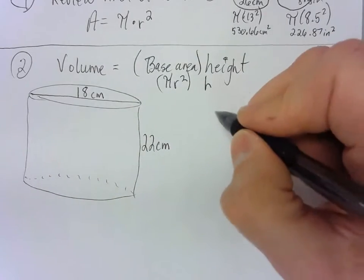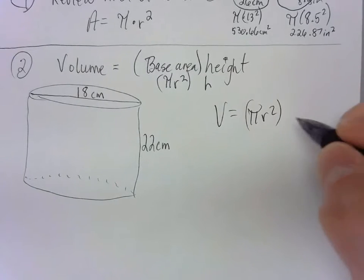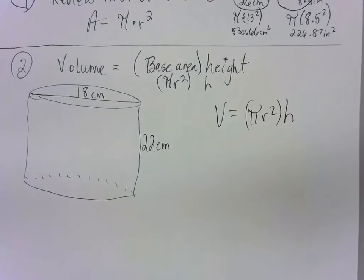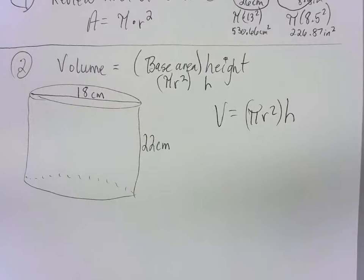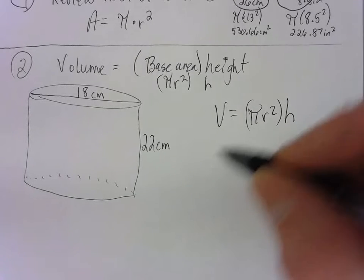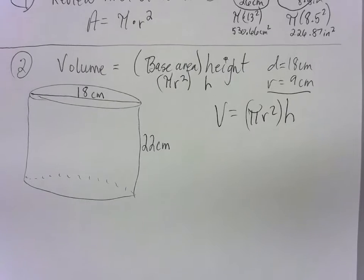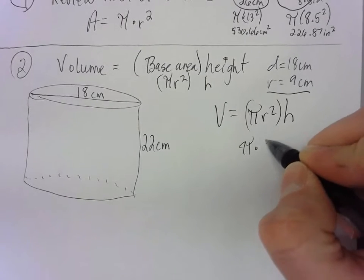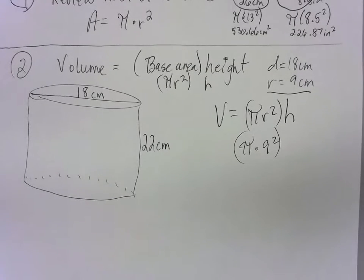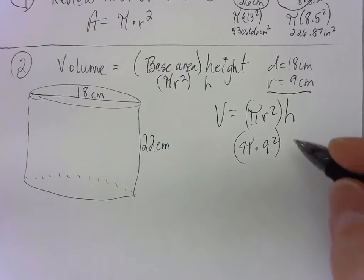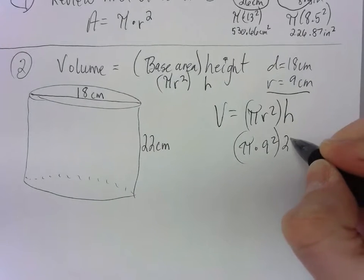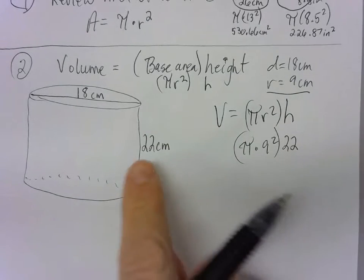The formula is: pi times radius squared times height. Since the diameter is 18 centimeters, the radius is half of 18, which is 9. Now we're ready. We're going to do pi times 9 squared, then multiply by the height of 22. Pi times 9 squared gives you the area of the circle, and then you multiply by the height.